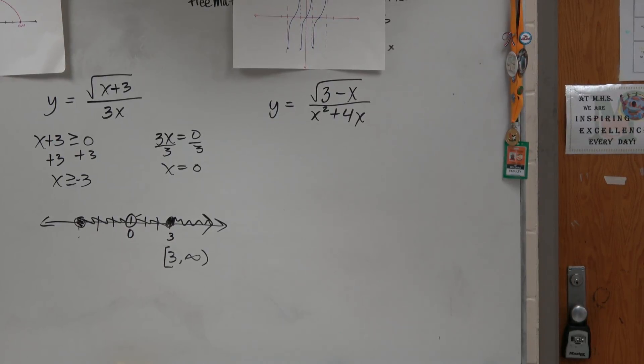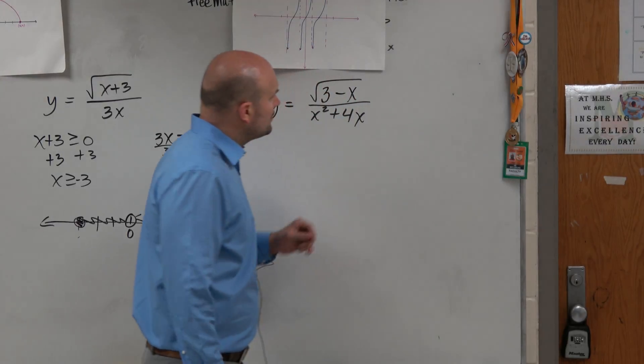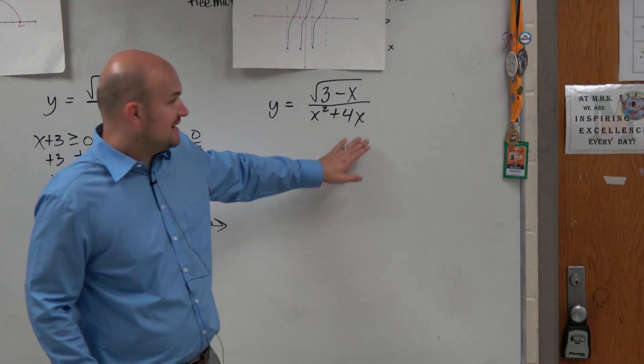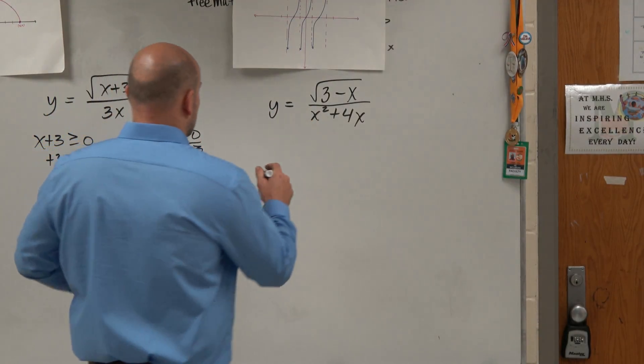There are notes I want to give to you guys. So 3 minus x. In this example, the same thing - we have a radical and we have a denominator. When we have a radical and denominator, we have to set them both up.